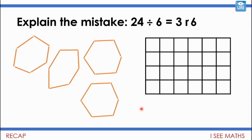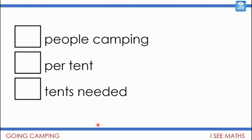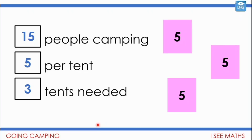Today everyone, we are going camping! We're using camping examples and you'll see the link between these camping scenarios and the division we've worked on. I love going camping — recently it was my birthday and we actually went camping in the garden, which was a lot of fun. So let's get going. A big group of people are camping. How many people per tent, and how many tents might we need? If 15 people were going camping with five people per tent, we'd need three tents.